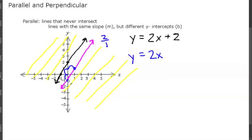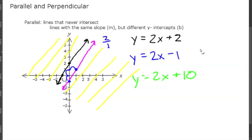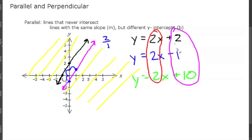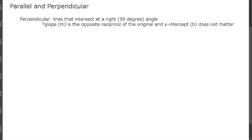The y-intercept for this line is -1, so an equation parallel to y equals 2x plus 2 is y equals 2x minus 1. Another equation that would be parallel would be y equals 2x plus 10. So you can see, as long as the slope is the same, the y-intercept doesn't matter — that is what creates a parallel line.